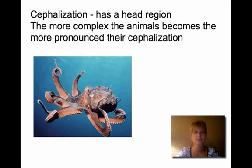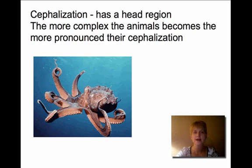Cephalization means that the animal has a distinct head region. Some very simple animals do not show cephalization — we can't tell the head from the tail — but as animals become more complex, we start to see a very pronounced cephalization. The most complex animals you've encountered always have a clearly defined head.